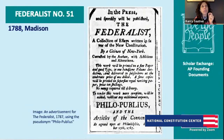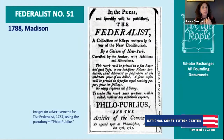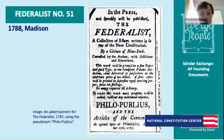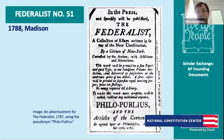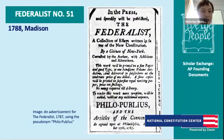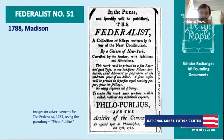The system Madison proposed sets up almost collisions between the branches — that's the way it's supposed to work. The other key quote: ambition must be made to counteract ambition. Madison's point is that people in government will probably be ambitious. We can't create a government that eliminates ambition. What we need is a government structured to use ambition to limit what government does — we don't want tyranny, we want effective government. Those are different things, and the structure requires branches that go at each other a little bit.